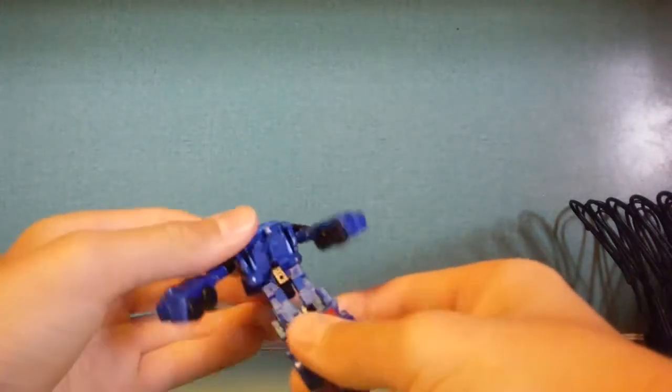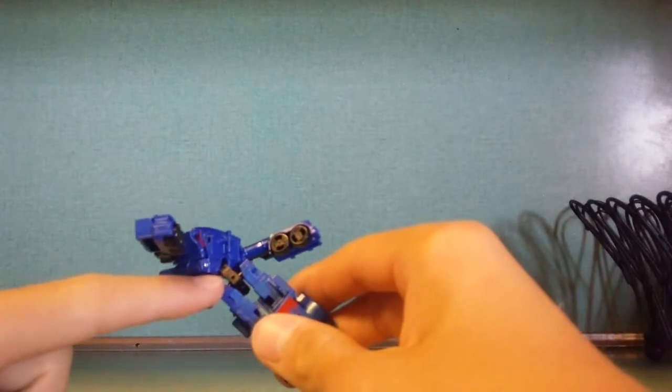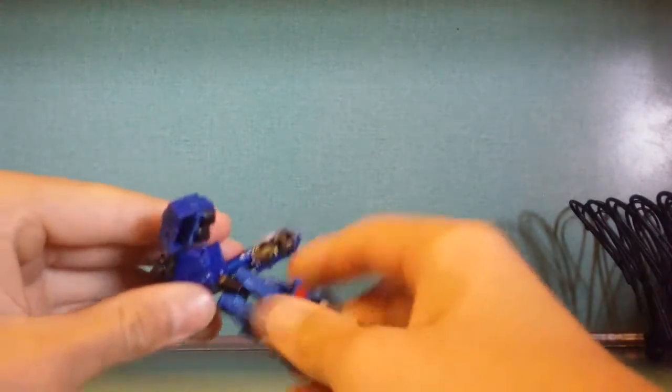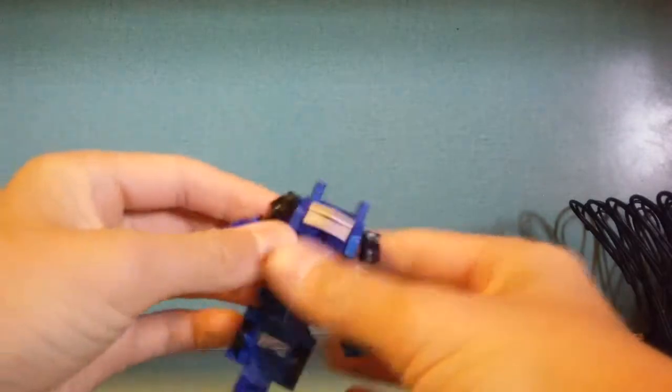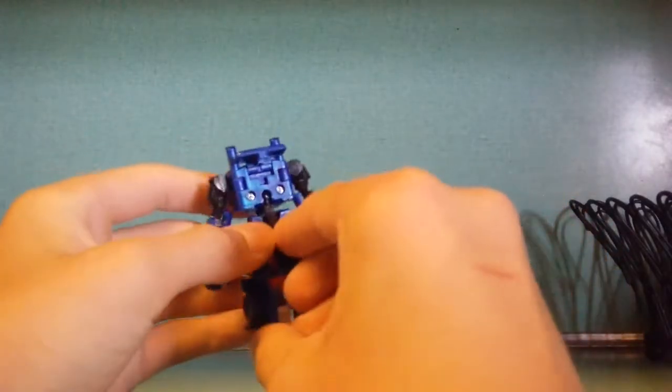Then his hip is on the ball joint, right, you just want to rotate that around, just like so. Once you've done that, separate his legs, come around to the back here.